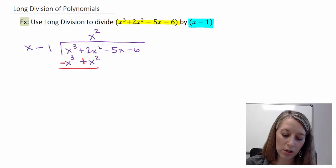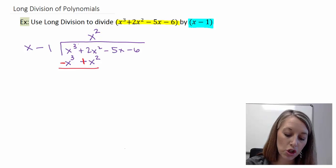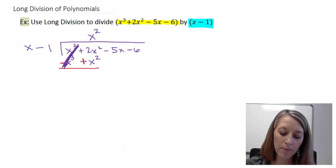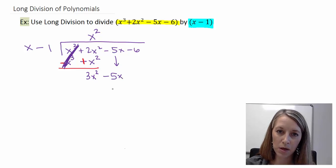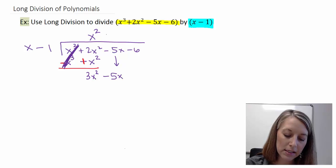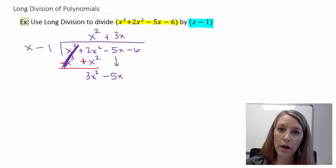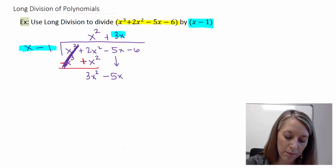Now let me do the subtraction. My x cubed minus x cubed cancels out, and it should — that's the whole process we're trying to mimic here. Then I have 2x squared plus x squared gives me 3x squared. I bring down my next digit and repeat the process. X times what gives me 3x squared? X times positive 3x gives me 3x squared. So now I need to do that multiplication — multiply everything here by this up there.